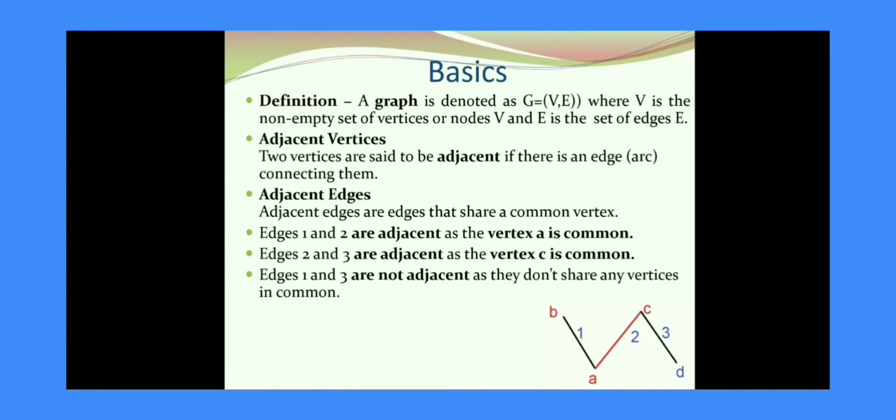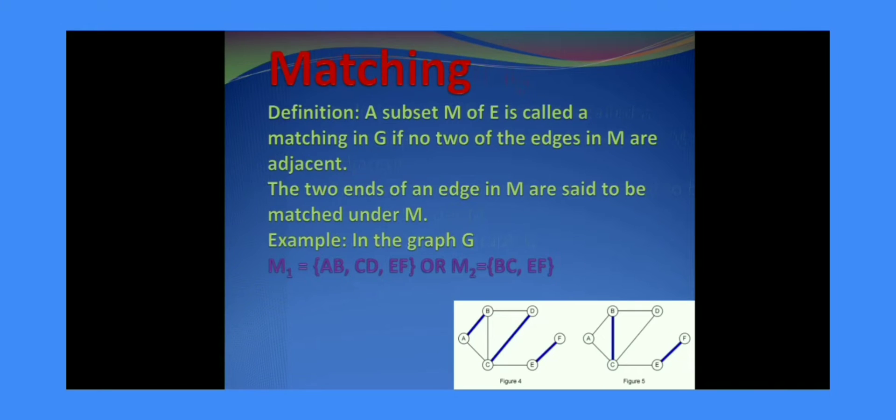This term is very important in the definition of matching. What is a matching? A subset M of E is called a matching in G if no two of the edges in M are adjacent. Let us get clear with that. G is a graph, and E is the set of edges in a graph. The subset M of E is said to be matching if it contains non-adjacent edges. That is, if we consider any two edges of M, then it should be non-adjacent.